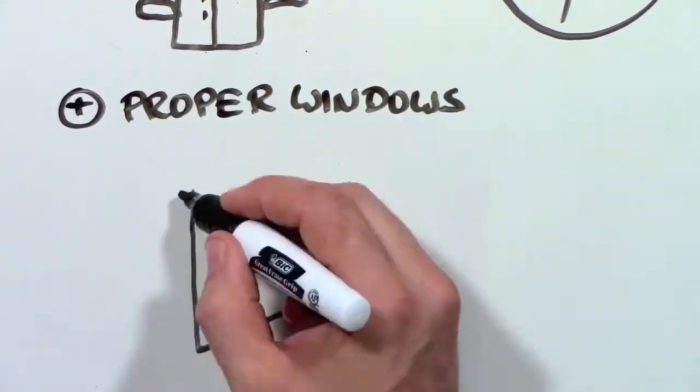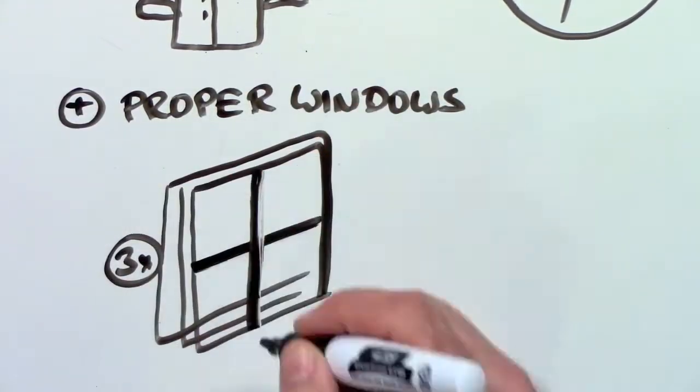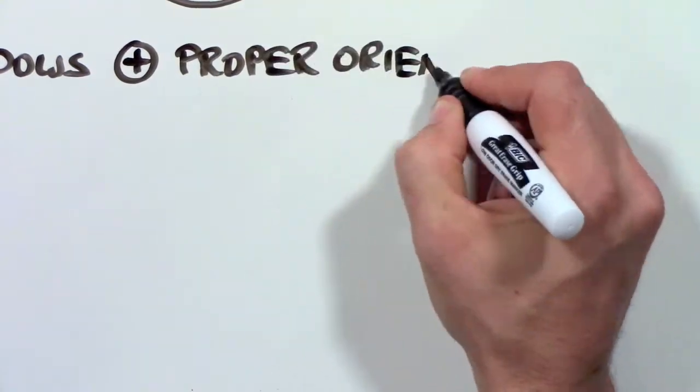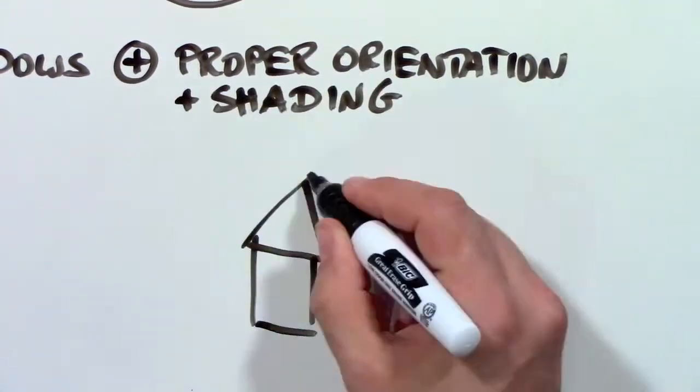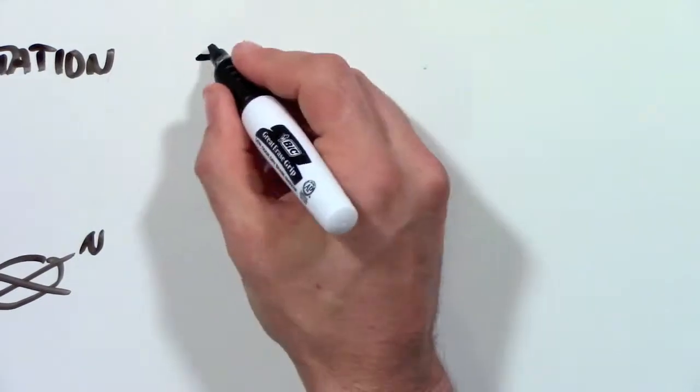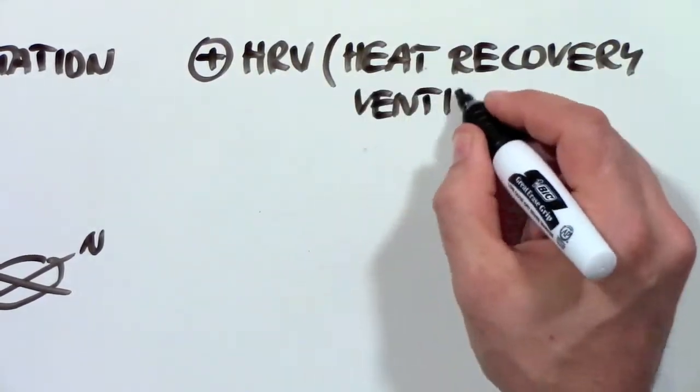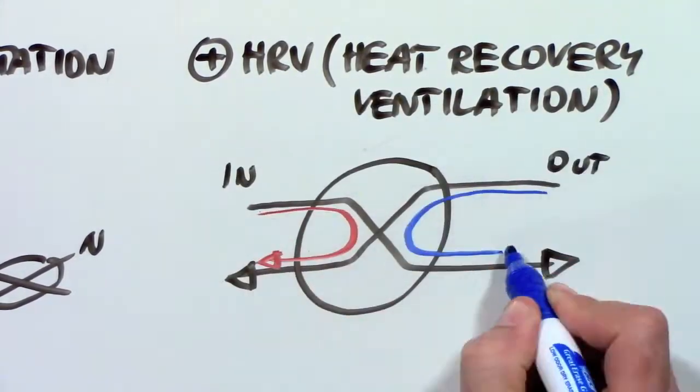Plus, the house needs proper windows most of the time with triple-pane glass. It needs to be oriented properly so the sun can heat it in the winter and shade is provided in the summer. And it uses an HRV, a device that provides the inside with fresh air without letting the heat out.